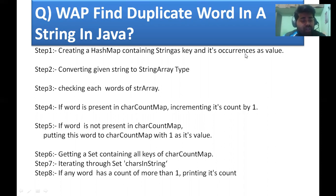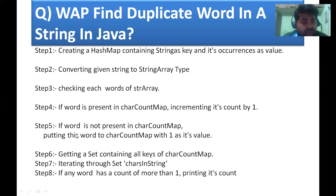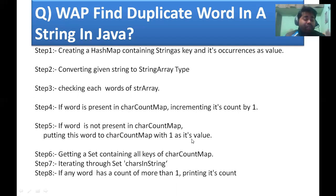Step three: use a for-each loop to iterate. Step four: count occurrences — if the object is already in the map, increment the value; if not, simply store it. Step five: if the word is not present, put the word as a key with count one. Step six: get the key set, extract key values, iterate, and apply your condition.